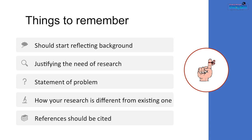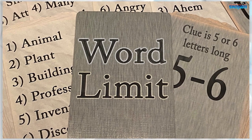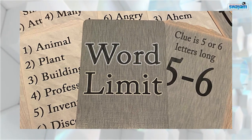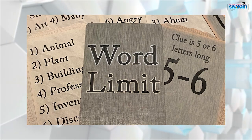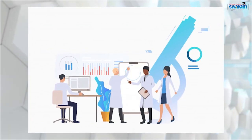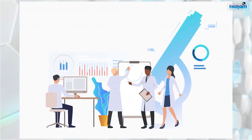Now let us focus on the things to remember. Introduction should be started by reflecting the background and justifying the need of research. Put the statement of problem and how your research is different from existing work, and references should be cited. The introduction should not have a strict word limit, but it should be as concise as possible. Sometimes scientists and researchers prefer to write it last to make sure they have not missed anything important.